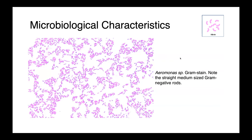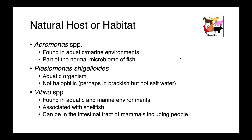If we consider the natural hosts or habitats of Aeromonas, Plesiomonas, and Vibrio: Aeromonas we tend to find in both aquatic and marine environments; it's part of the normal microbiome of fish and it's common in the water itself. Plesiomonas shigelloides is an aquatic organism, so it's not halophilic and not one we tend to find in salt water, although we may find it in brackish water — water which has a lower salt concentration than seawater.